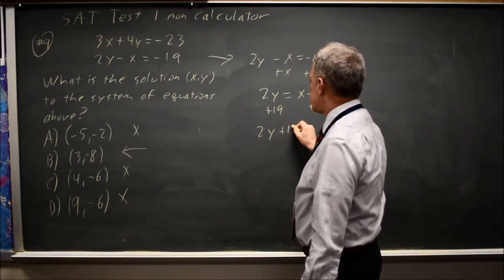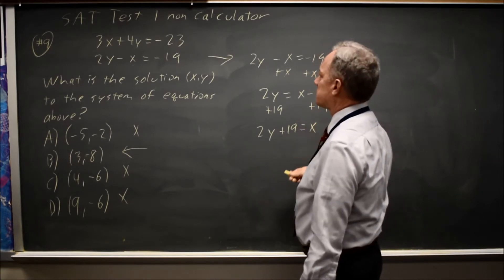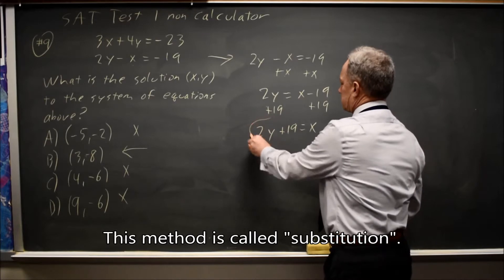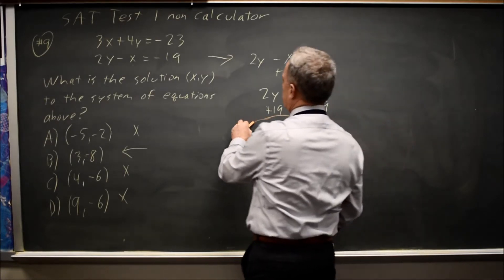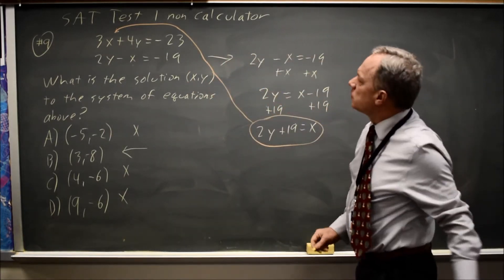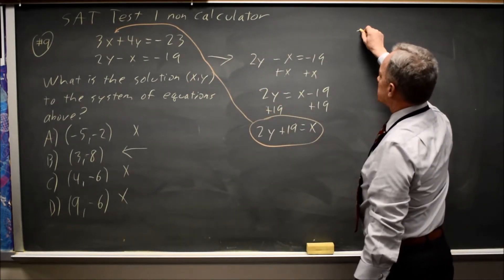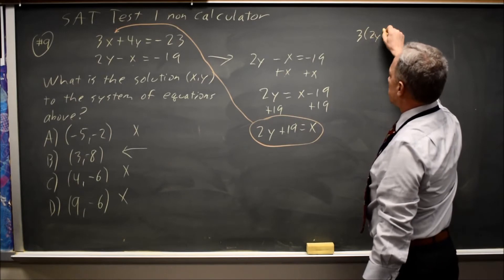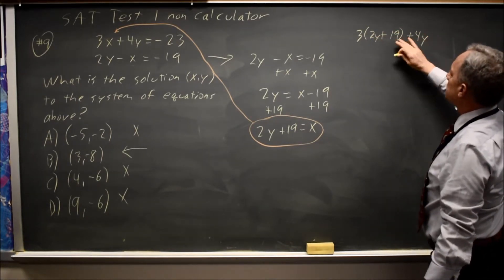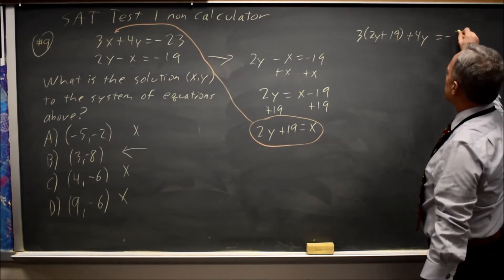2y plus 19 equals x. I'm going to substitute this in for x in the first equation, which gives me 3x is 3 times 2y plus 19 plus 4y equals negative 23.